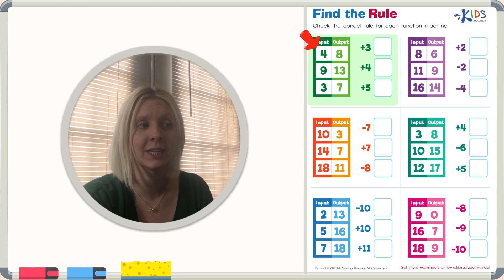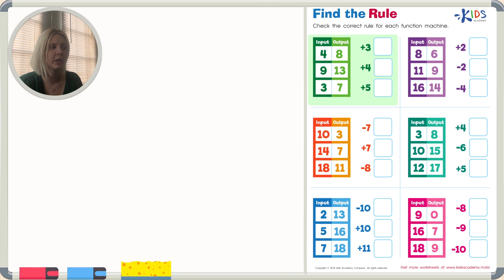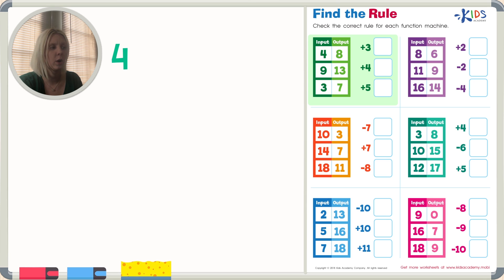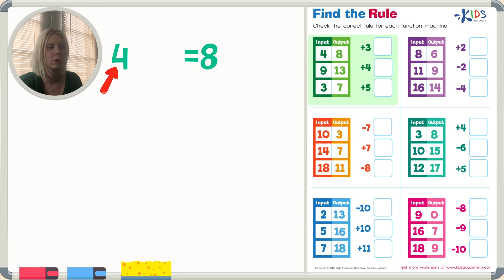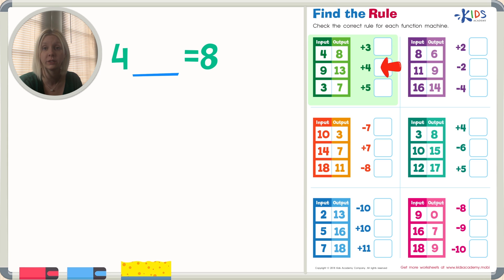It says input and output on the other side. Input is what we start with in our machine. We start with the number 4, and our output is going to be 8 — that's what we come out with when we're all done with our machine. I'm going to turn this into an equation with 4 at the beginning and 8 at the end. We have a few options: plus 3, plus 4, or plus 5.